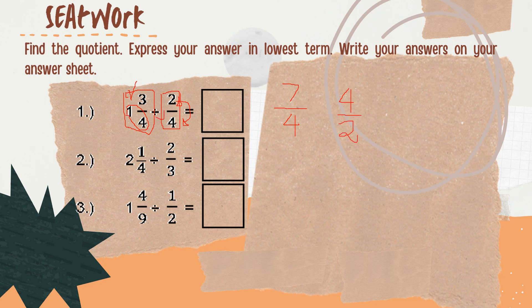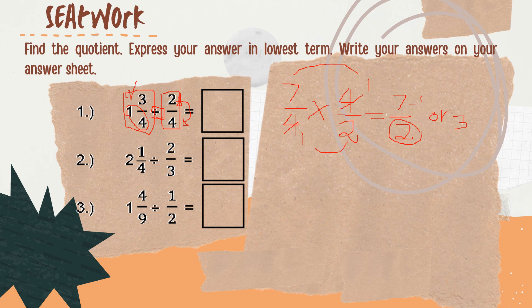Instead of division, we are going to multiply. We can cancel out 4 and 4 — they become 1 and 1. 7 times 1 is 7. 1 times 2 is 2. Reduce the answer to lowest terms. How many 2s are there in 7? 3. 3 times 2 is 6. 7 minus 6 is 1. So the answer is 3 and 1 half.